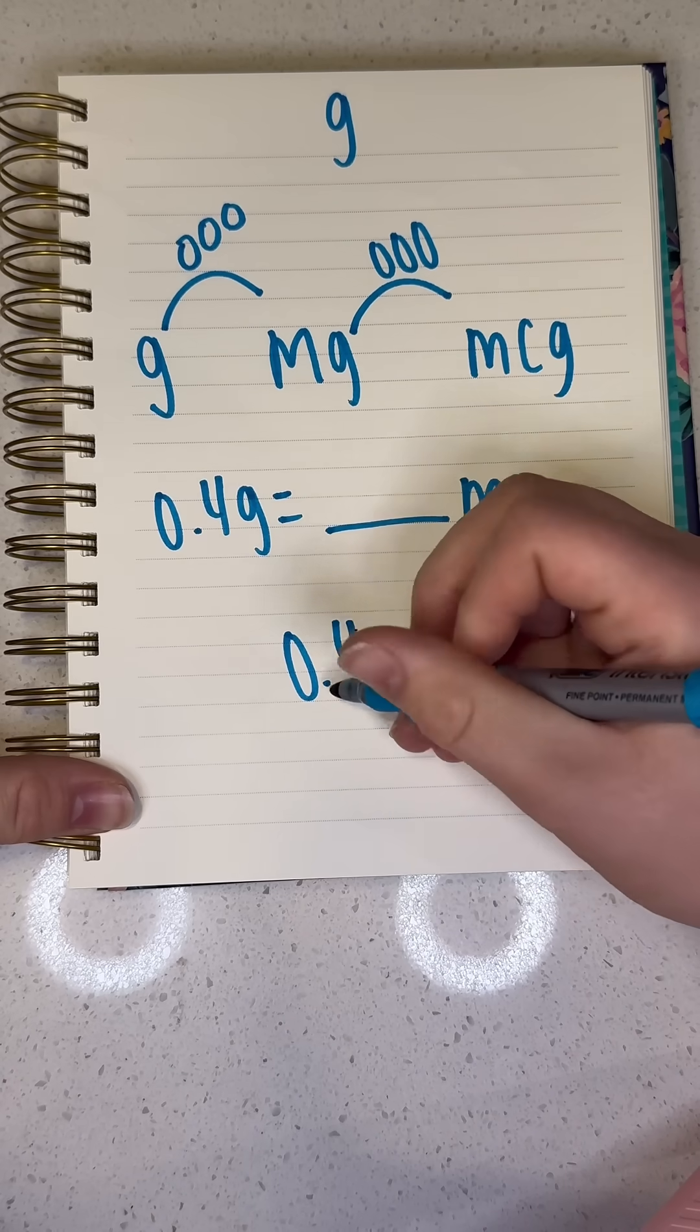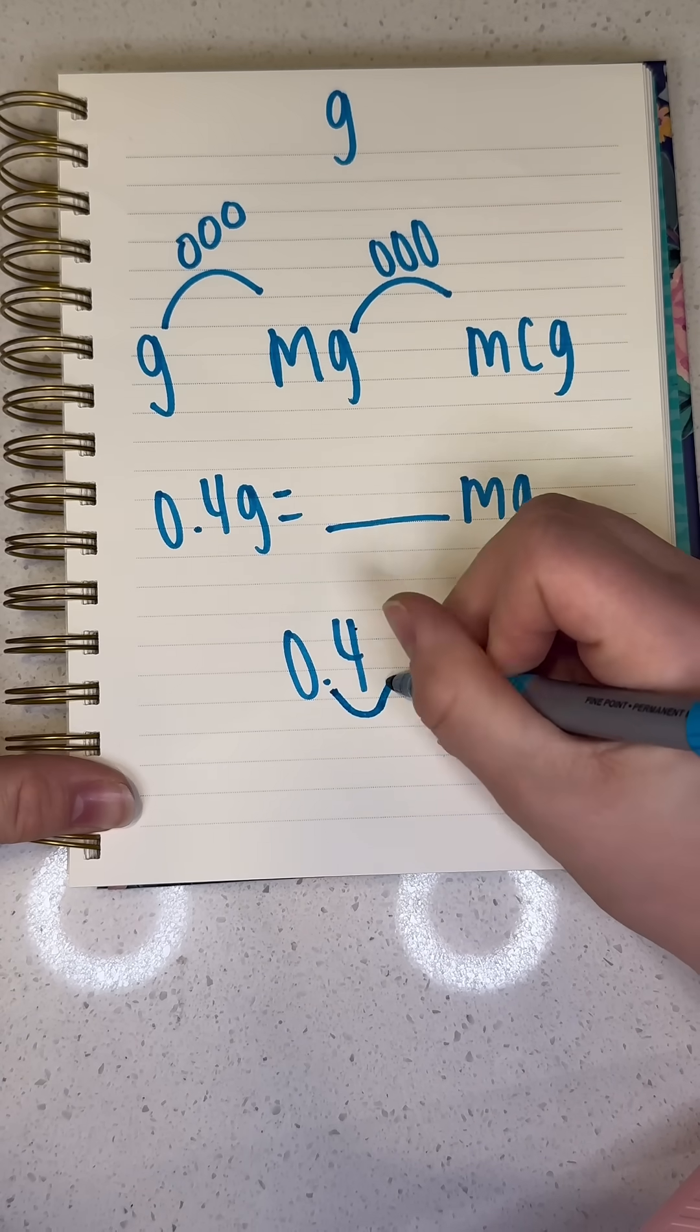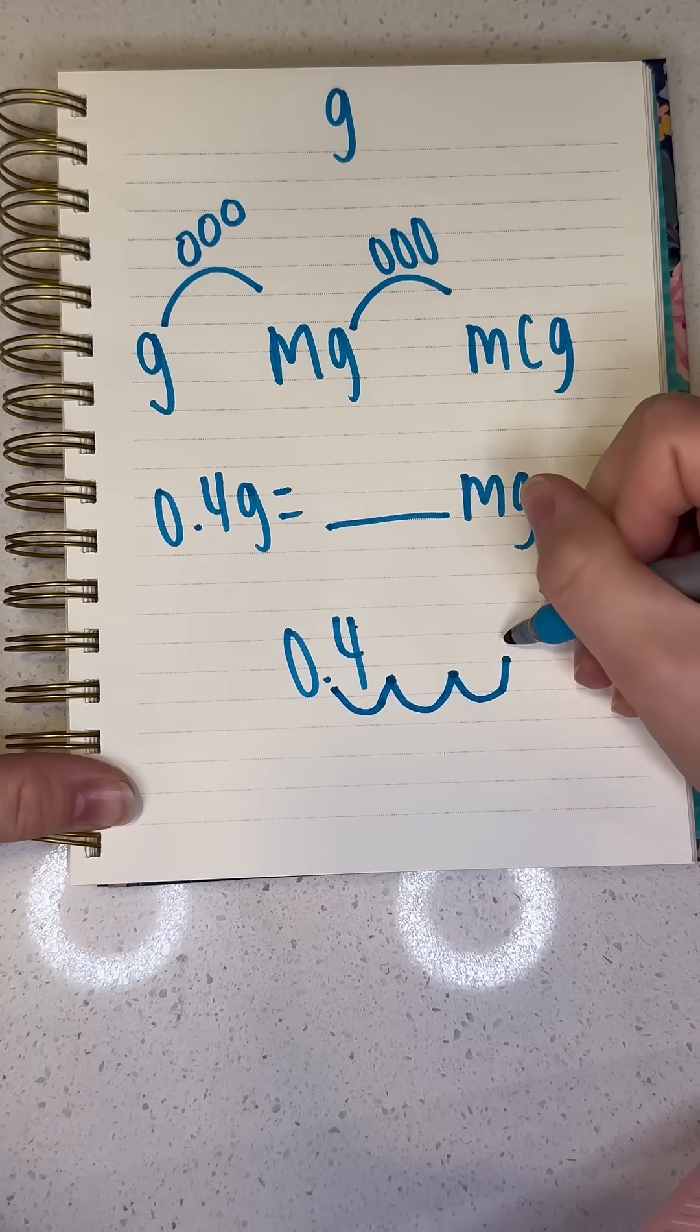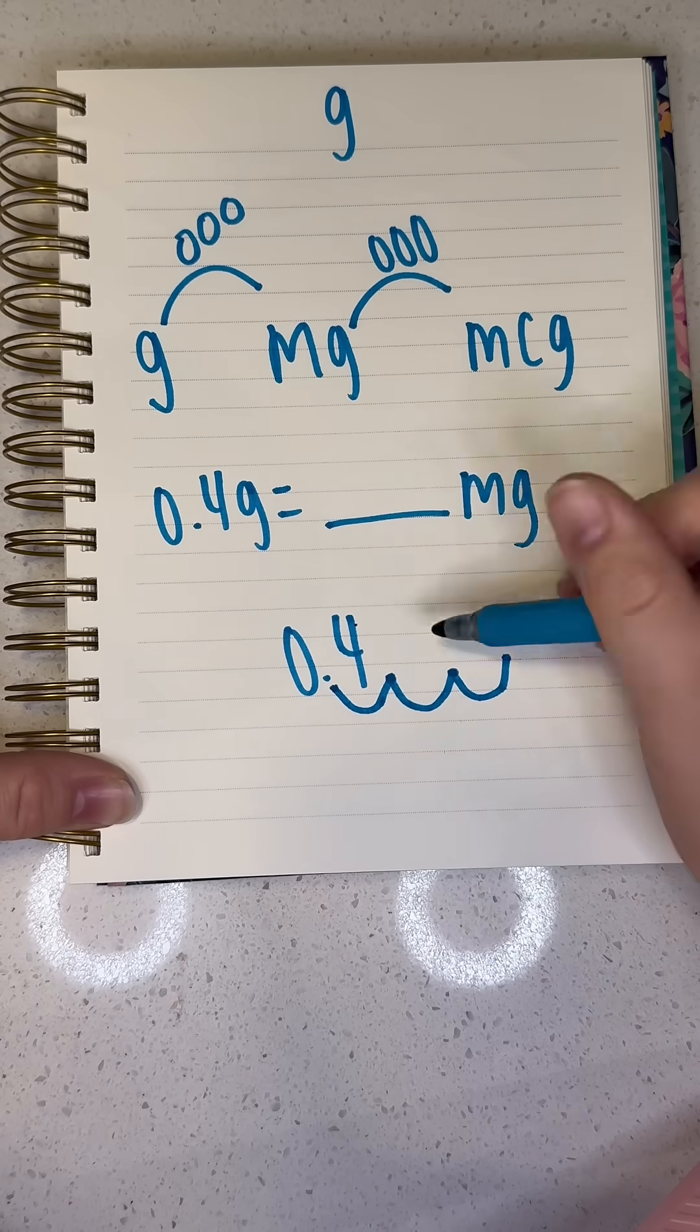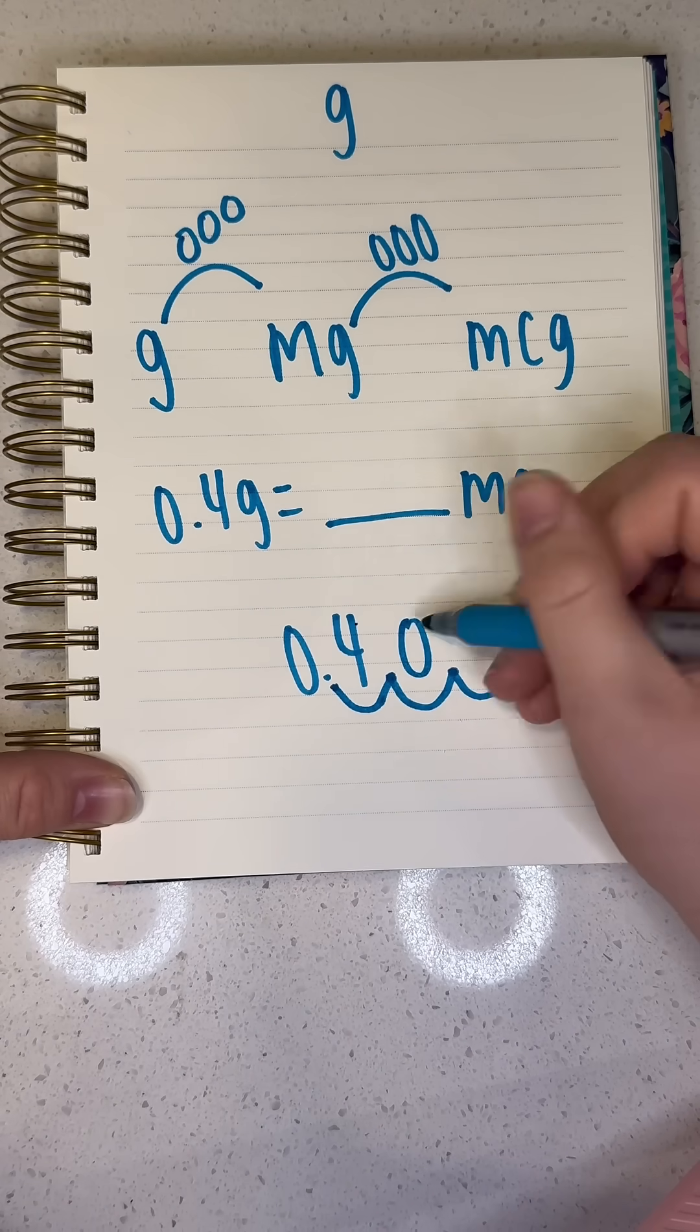Here's our decimal. We're going to do this. One, two, three. Put the decimal point right there. And you're going to fill in this with zeros.